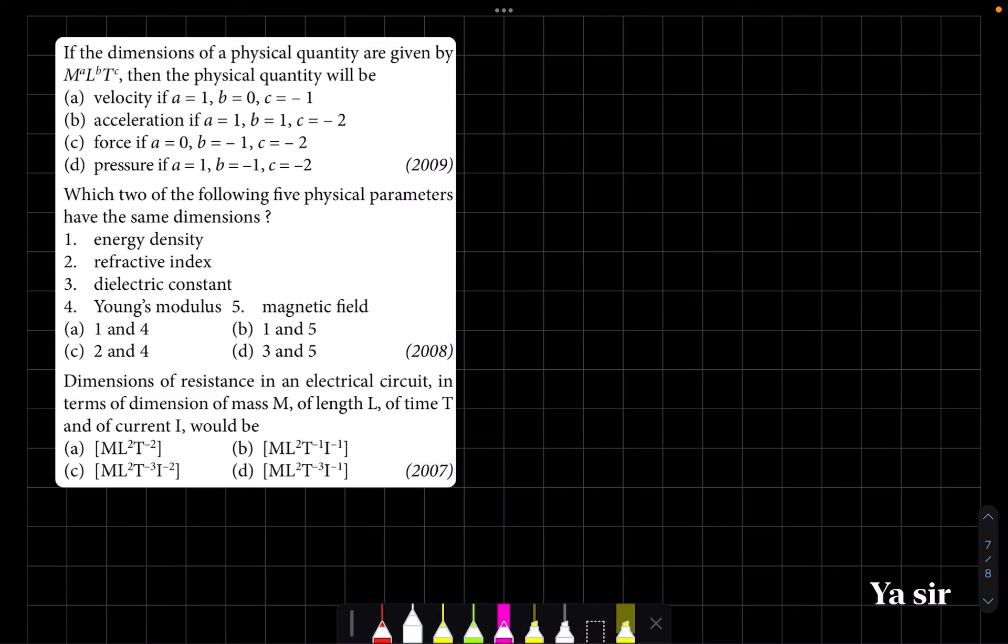Hi everyone. So the question is, if the dimensions of physical quantities are given by m raised to a, l raised to b, t raised to c, then the physical quantity will be. Four options are given.